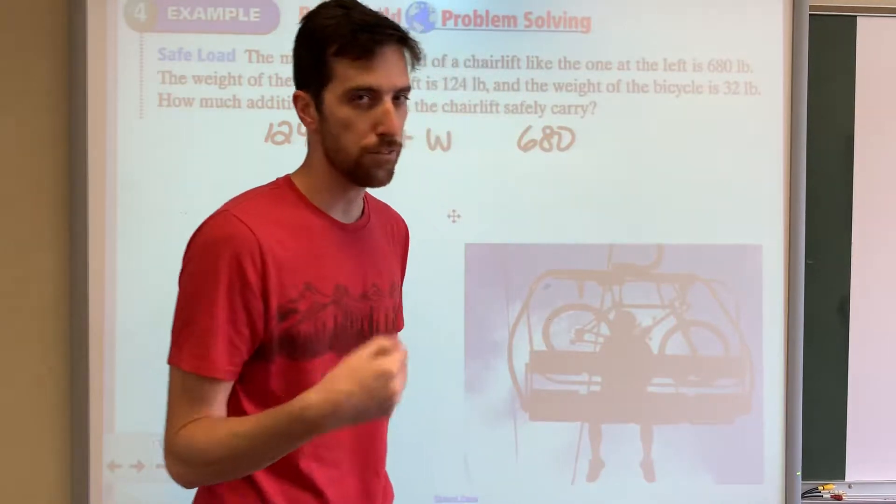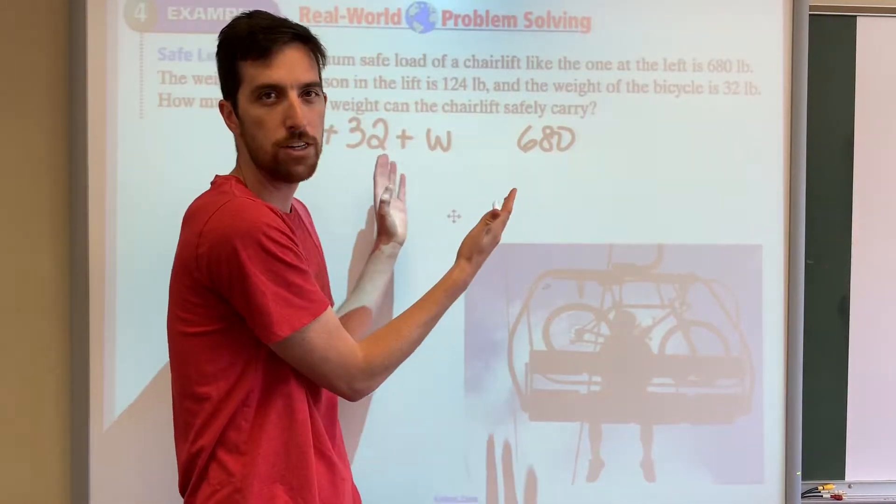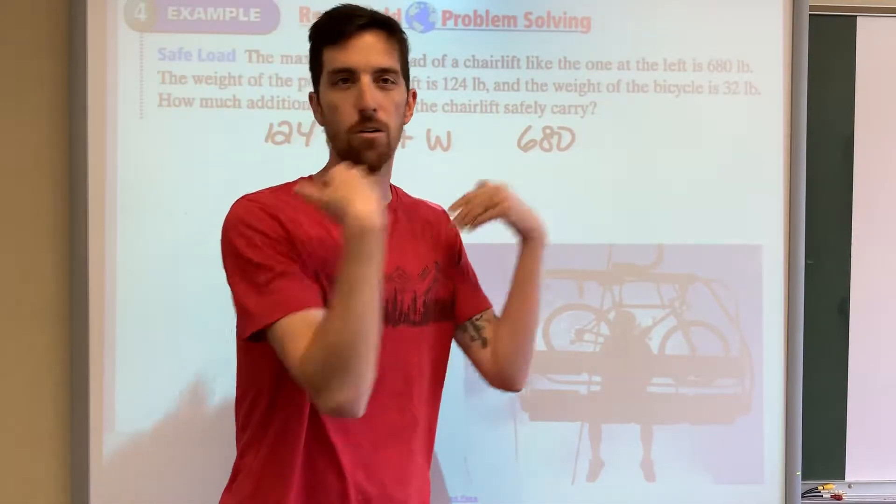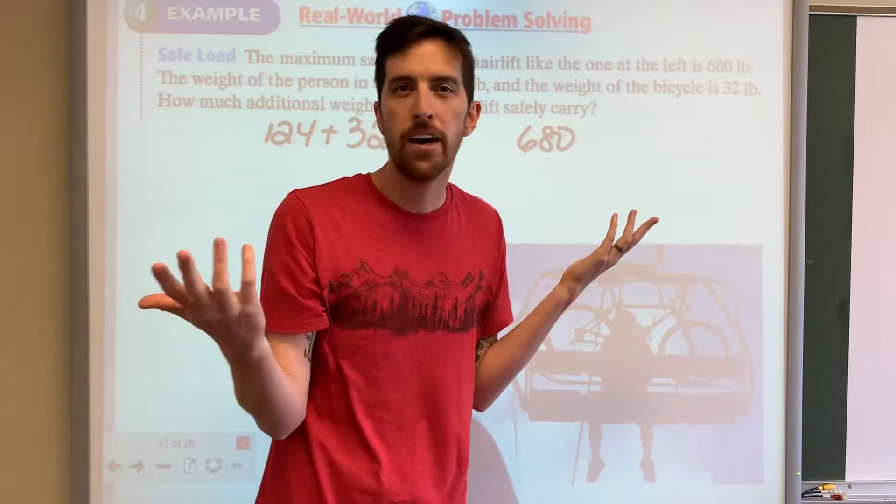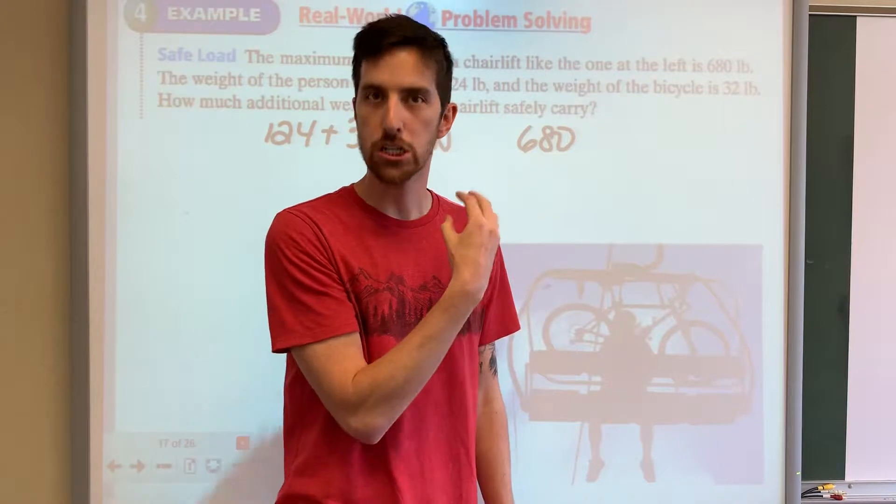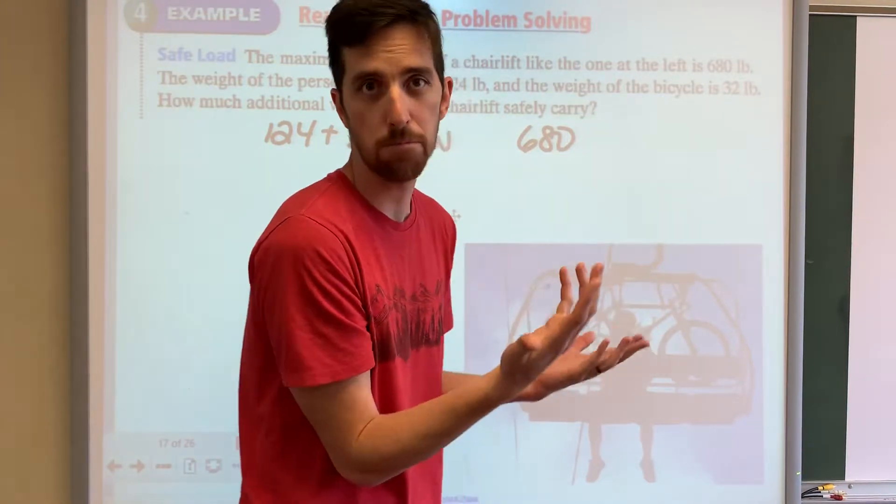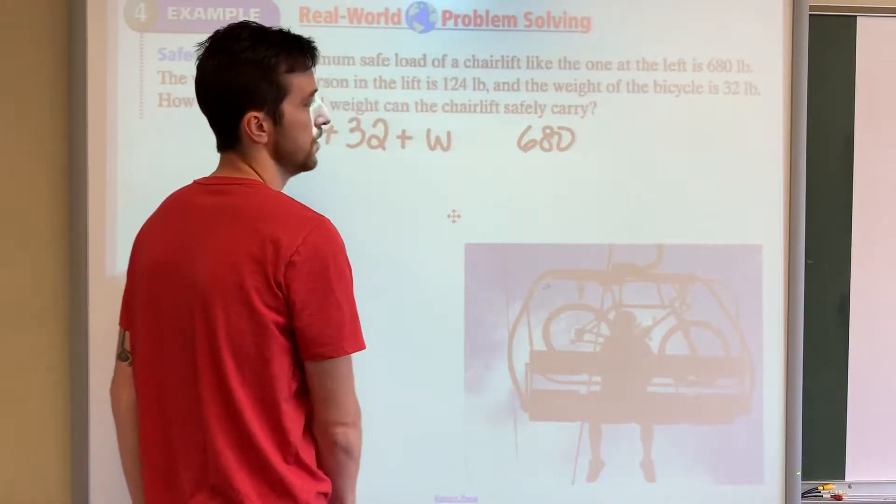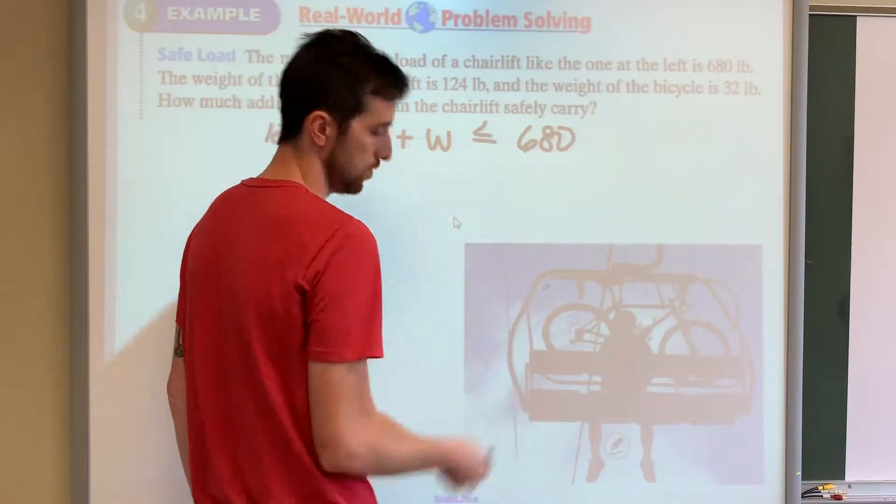Now, is it cool if we get this up to 680 over here? Yeah, sure. Could it go over 680 and be 700? No, because it's going to go plummeting down. So it's got to be under 680, or at most, it could be 680. So it's got to be less than or equal to 680.